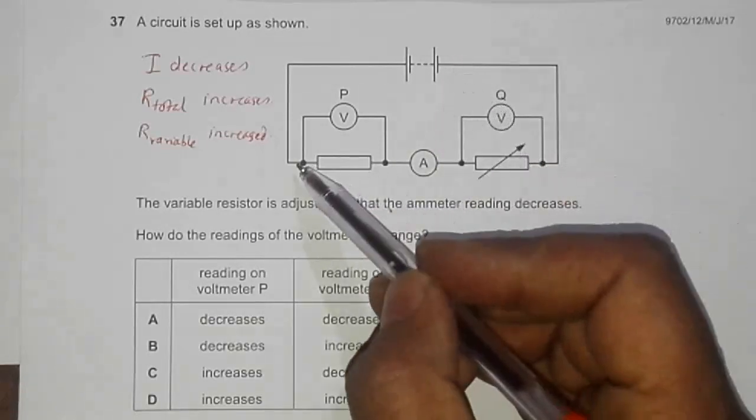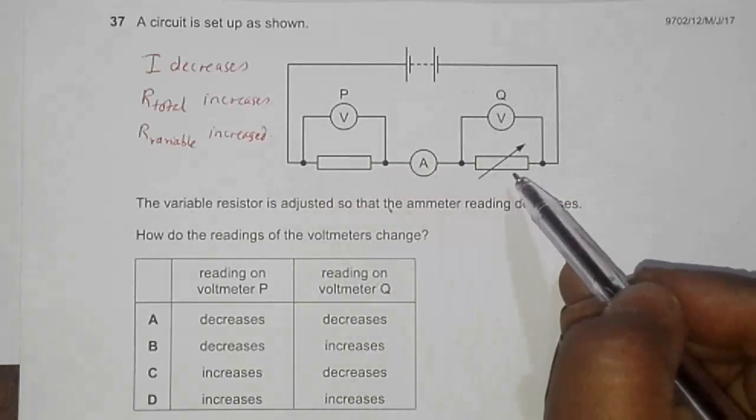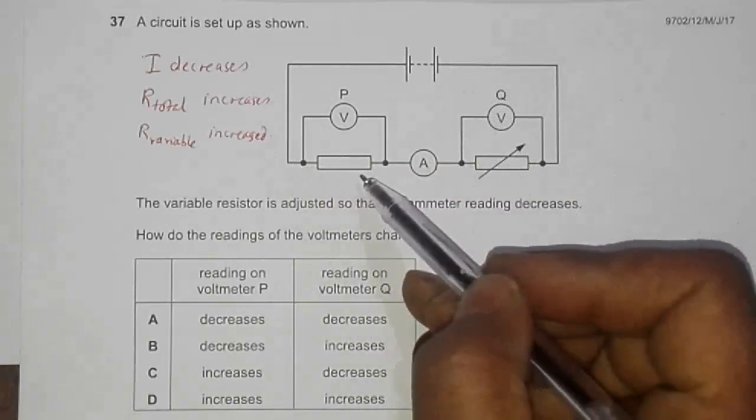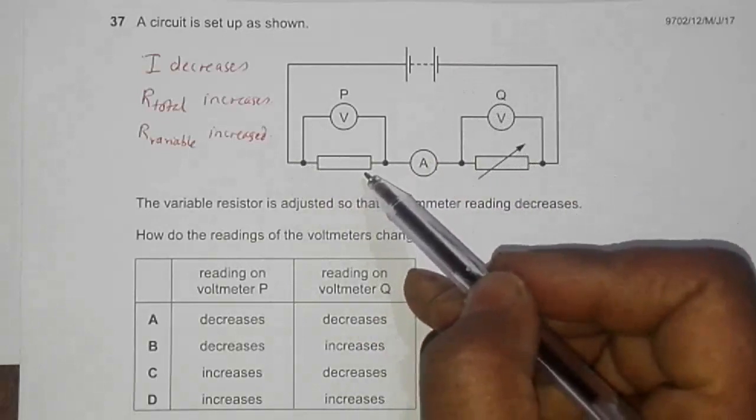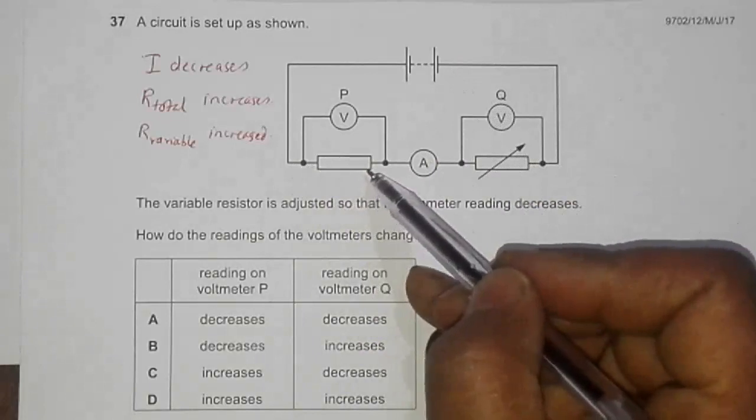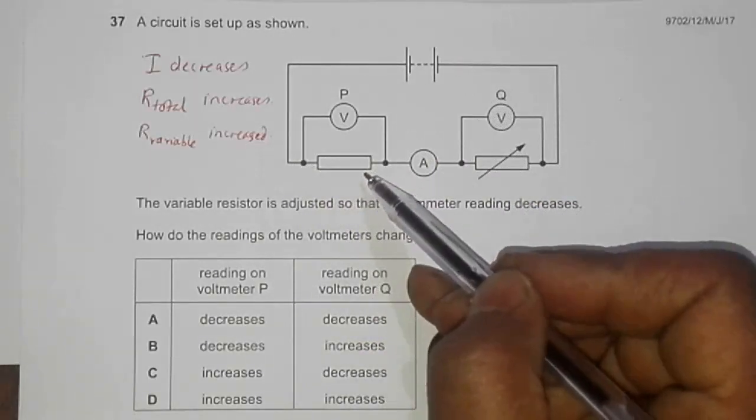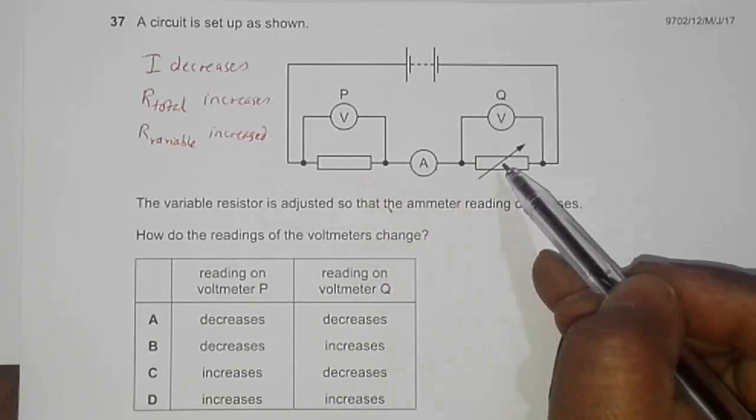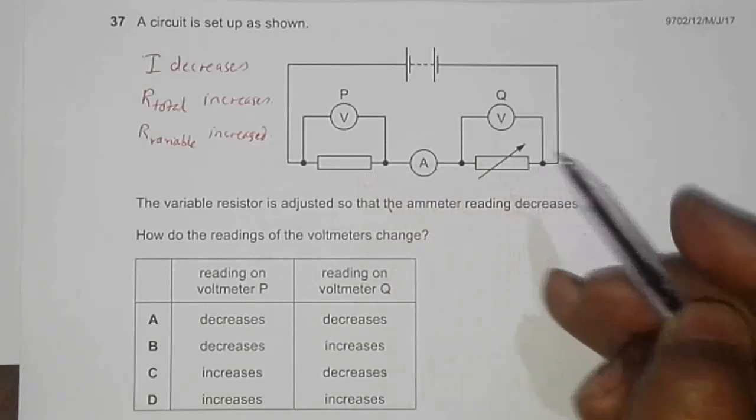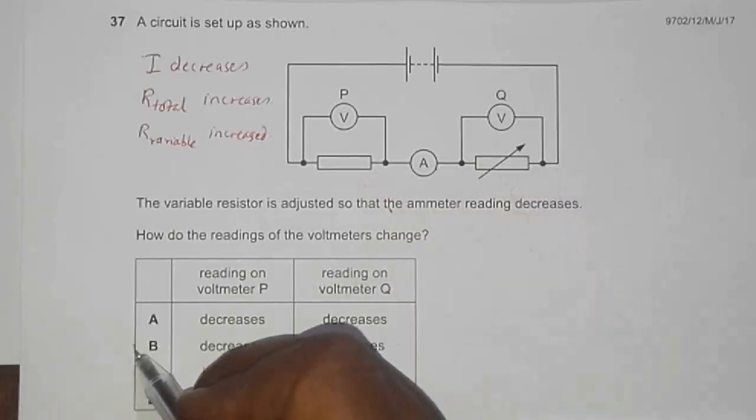Since Q increases, this reading given by voltmeter P should decrease. So VP decreases and VQ increases, which is choice number B.